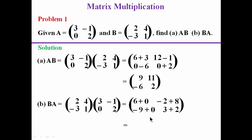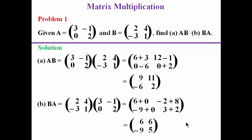We simplify to get our final matrix. 6 plus 0 gives 6, negative 2 plus 8 gives 6, negative 9 plus 0 gives negative 9, and 3 plus 2 gives 5. That is the solution of problem number 1.